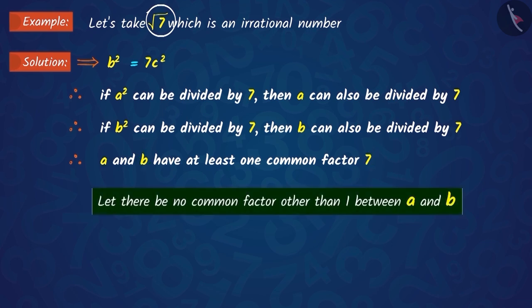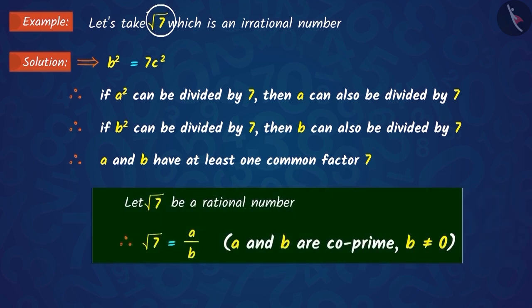Note that we had assumed that a and b do not have any common factors other than 1. Whereas, the opposite or contradiction of this is obtained. This contradiction has occurred because we have made an incorrect assumption that √7 is a rational number.